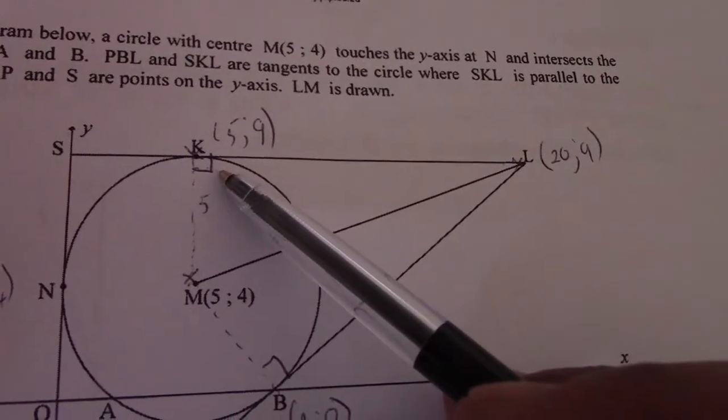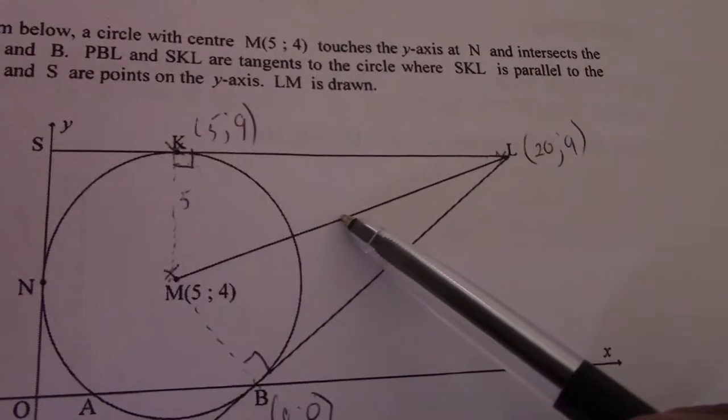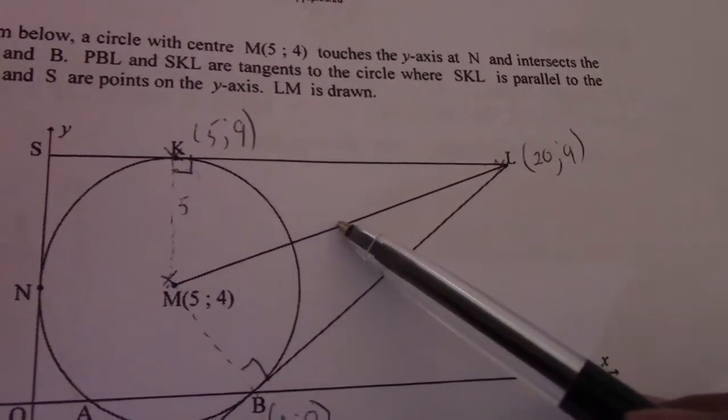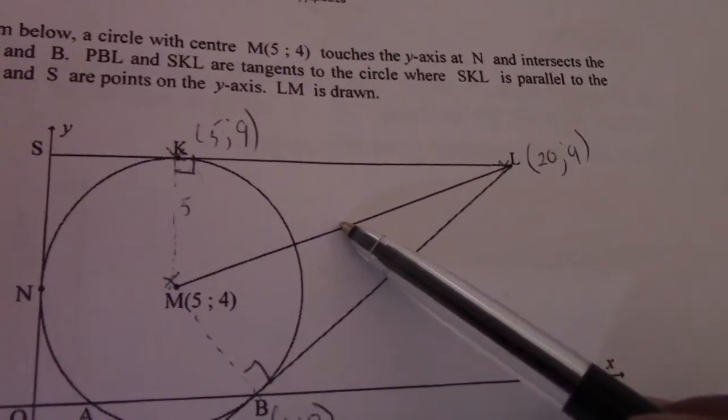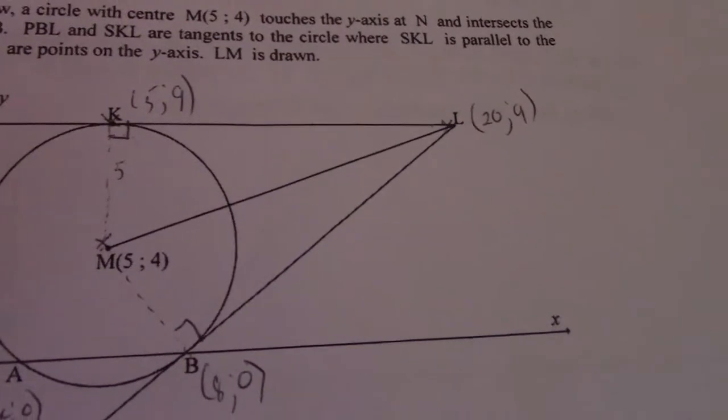Because of that 90 degree angle, ML is the diameter. If I find the center coordinates, I find my center for this equation. And at the same time, I have to find the length of that radius.